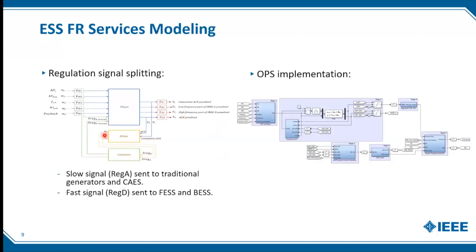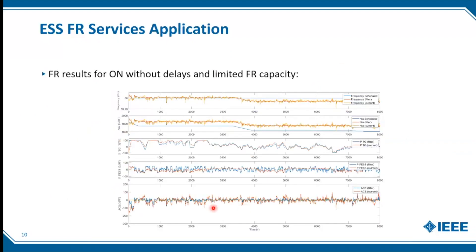One issue that had to be dealt with is communication delays. In actual power systems you can have significant communication delays when you send these signals. We advised the system operator that if you want to introduce energy storage services for frequency regulation, you first have to resolve the issue of communication delays. We developed, for the Independent Electricity System Operator of Ontario, a model and a control system that divides the frequency signal into two parts. What it shows is that as events happen in the system, the area control error, when you have these fast services, improves significantly.